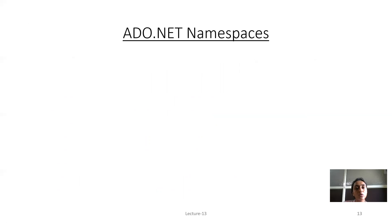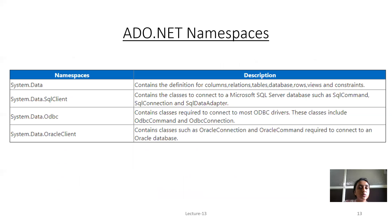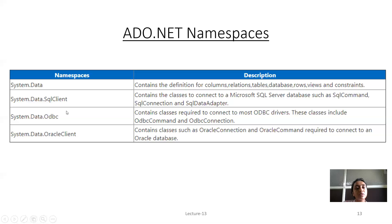Next are the major ADO.NET namespaces. To program in ADO.NET, we must add the appropriate namespaces. First, System.Data is used when writing definitions for columns, relationships, tables, databases, rows, views, etc. System.Data.SqlClient is used wherever we are using SQL Server database — SqlCommand, SqlConnection, and SqlDataAdapter classes are used here. If we are using ODBC database, we add System.Data.Odbc. And if we are using Oracle, we need to write System.Data.OracleClient as the namespace.